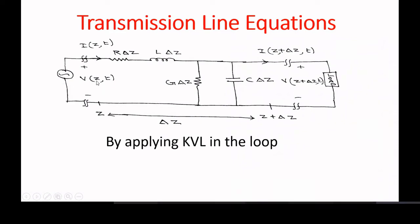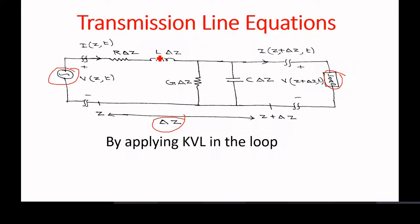Connecting the source or generator and the load, the length of one section we are considering is delta z. The transmission line section is represented with resistance r delta z in series with inductance l delta z, and the parallel section is represented by g delta z and capacitance c delta z. The starting point is z, so the ending point will be z plus delta z.